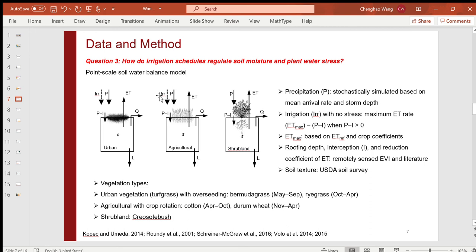Representative vegetation types are used over different land covers. For urban vegetation, I assume turf grass with common overseeding practice, so we have Bermuda grass from May to September, and rye grass dominate from October to April next year. For agricultural land, two common crop types with crop rotation are assumed. From April to October, we use cotton, while in winter, we have winter wheat.